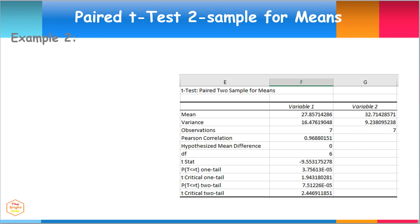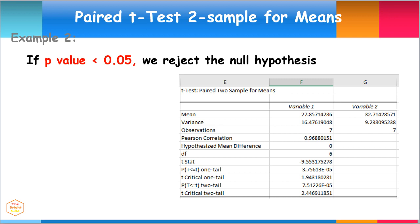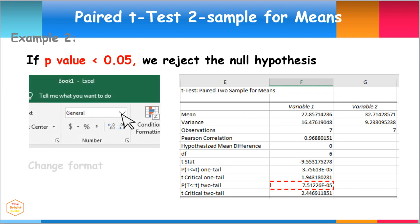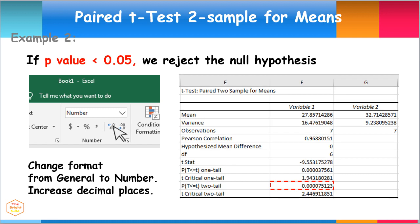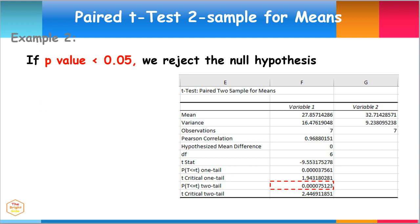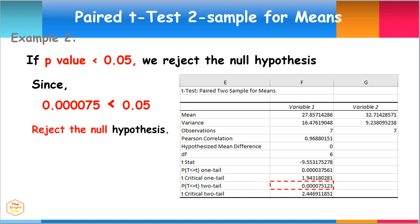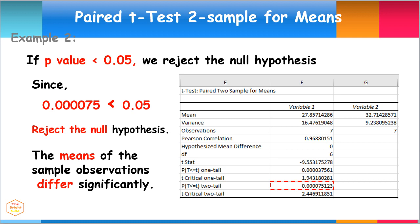Another method is determining whether the P-Value is less than 0.05, which is the alpha value. If this is the case, then one must reject the null hypothesis. Notice that the P-Value results are too small and shown in exponential form. For more clarity, let's first change the format of the P-Value results from general format to number format, then increase the decimal places to show more non-zero digits. Now, since 0.000075 is less than 0.05, therefore we reject the null hypothesis. The means of the paired sample observations differ significantly.